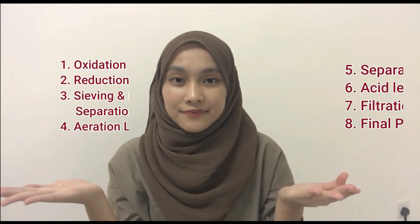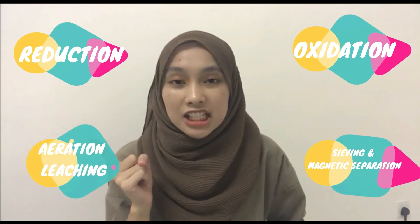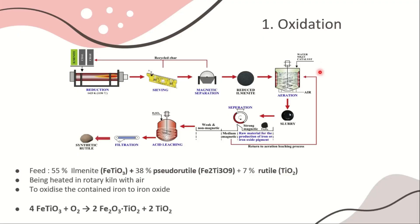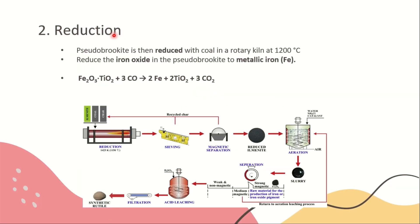Hi, my name is Nor, and I'm going to explain the unit processes involved in the Becher process. There are a total of eight processes. I'll explain the first part, which covers oxidation, reduction, sieving, magnetic separation, and aeration.